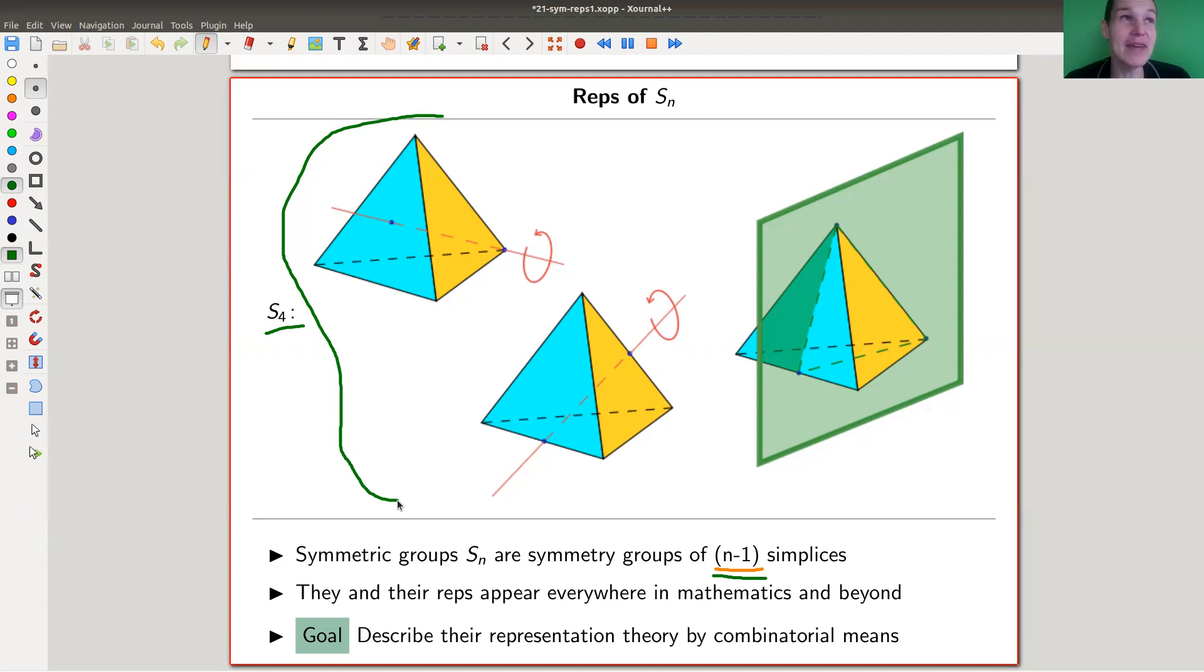Why combinatorially? Well, combinatorics is always good. And for the symmetric group, there should be some hope, because it's a group of combinatorics, basically. So that's what we want to do. So we want to describe the representation theory of symmetric groups by some combinatorial means, whatever that means. It's a little bit defined. And we'll just get started and see how far we can go.